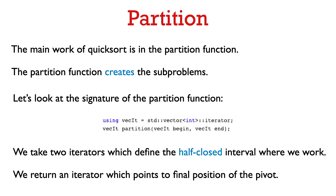Let's look at the partition function. For simplicity, let's suppose we're sorting a vector of integers. The partition function takes as input two iterators named begin and end, following the usual C++ convention of a half-closed interval — elements from begin up to but not including end. It takes the element pointed to by begin as the pivot, puts it in a correct position in the sorted order such that everything from begin to the pivot is at most the pivot and everything to the right of the pivot up to but not including end is at least the pivot, and returns an iterator pointing to the pivot's location.